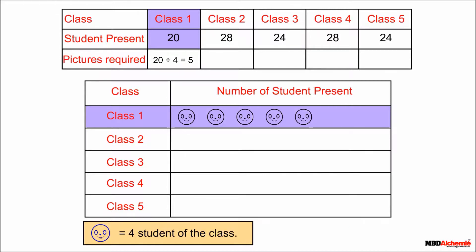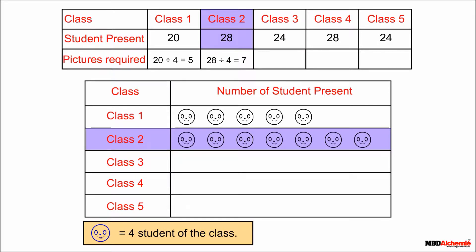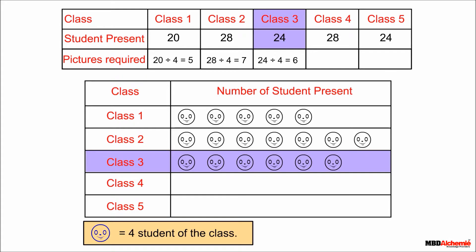When we add 4 five times, we get 20. Similarly, we represent the other classes. The number of present students in class 2 is 28. On dividing 28 by 4, we get 7, so we draw 7 pictures for class 2. The number of present students in class 3 is 24. On dividing 24 by 4, we get 6, so we draw 6 pictures for class 3.